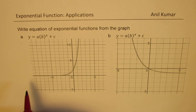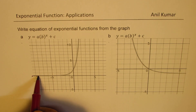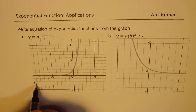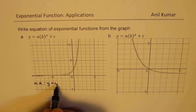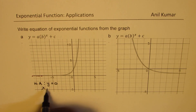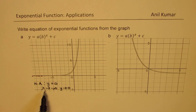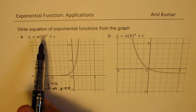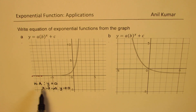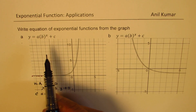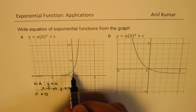In part A, what we notice is that the horizontal asymptote is here — the function is approaching 0 but not really at 0. So in this particular case we have a horizontal asymptote which is y equals 0. It really means that when x approaches negative infinity, y approaches 0. The horizontal asymptote directly gives you the value of c, so c equals 0 for this graph.